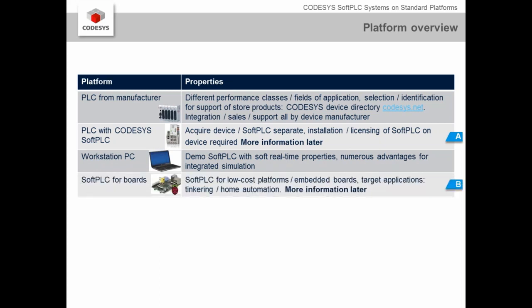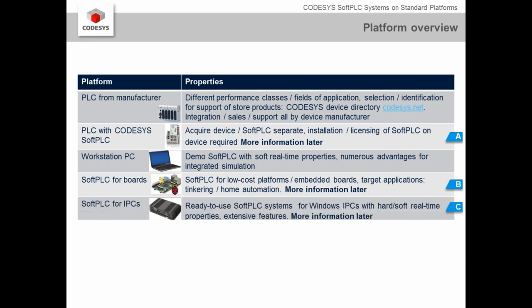The fourth option — which we'll discuss later with a live demonstration — features soft PLCs for low-cost boards now available on the market. Such embedded boards could be used for tinkering and home automation applications. The fifth platform is an industrial PC with Windows, where a soft PLC available in the CODESYS store can simply be downloaded and installed. These are the three different cases we will discuss in more detail.